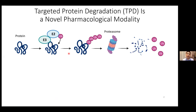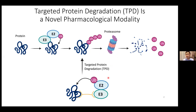As most of you are familiar with, the ubiquitin proteasome system is the most prevalent pathway for selective protein degradation in eukaryotic cells. In this process, the substrate protein will be ubiquitinated by the E3 ubiquitin ligase with the help of the E2 ubiquitin conjugating enzyme. After repeated rounds, the substrate protein will be polyubiquitinated, and the polyubiquitin chain directs the protein for degradation by the proteasome.